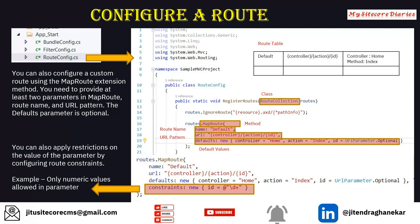There is one more thing in this class: on line 14 you see IgnoreRoute. So what is IgnoreRoute? This is basically telling the routing engine that it should not process this request — those pattern requests. If you see the pattern, it is basically the .axd file, which should not be processed. This is because MVC itself is an HTTP handler and MVC does not know how to process the .axd handler — it will be handled by a different handler. That is why you tell it: if you receive any request that has .axd, ignore that. This is how your RouteConfig gets configured.